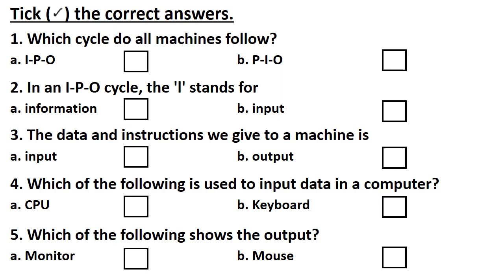Fourth question: Which of the following is used to input data in a computer? Answer is Option B: Keyboard. Question number 5: Which of the following shows the output? Answer is Option A: Monitor.